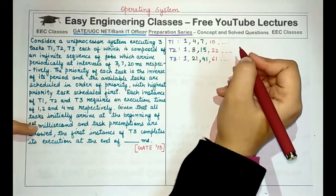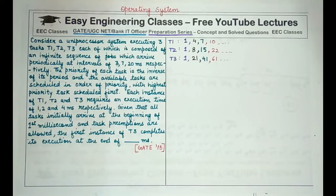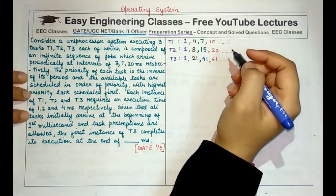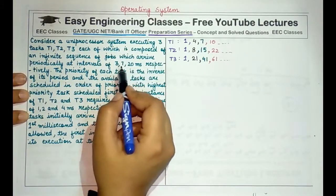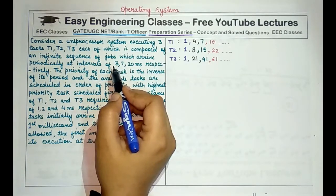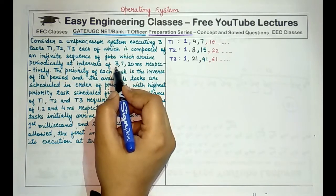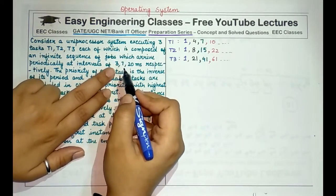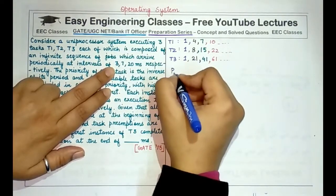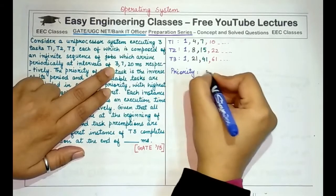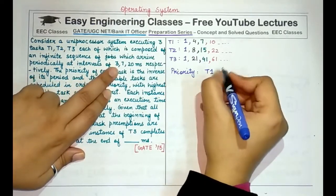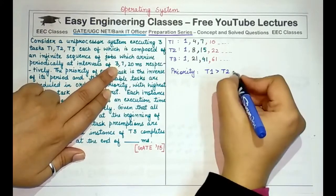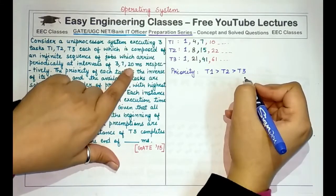We need to find at what time the first instance of T3 completes. The priority of the three tasks is different: since priority is inversely proportional to the period, T1 has the lowest period of 3 ms and therefore has the highest priority. T2 has the second highest priority, and T3 has the lowest priority because it has the maximum period of 20 ms.